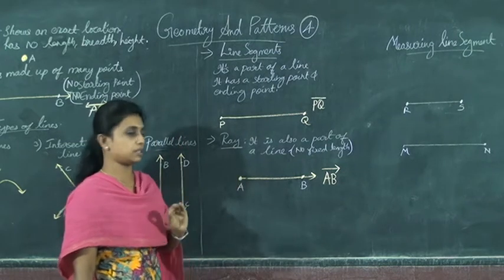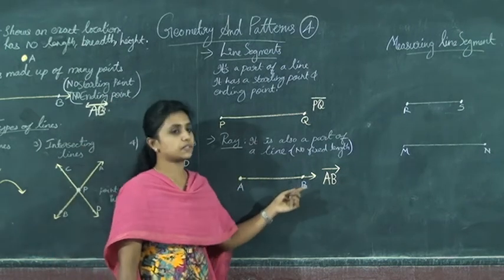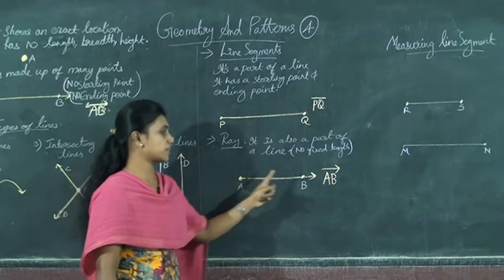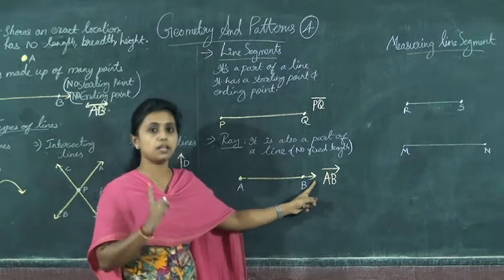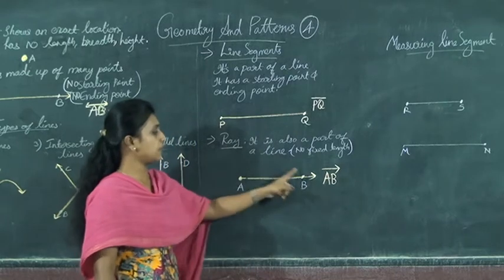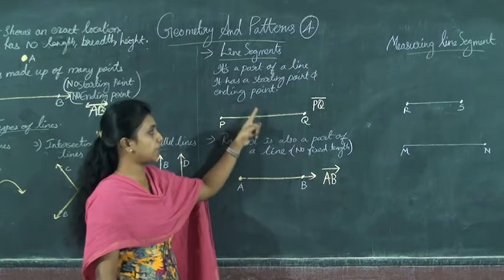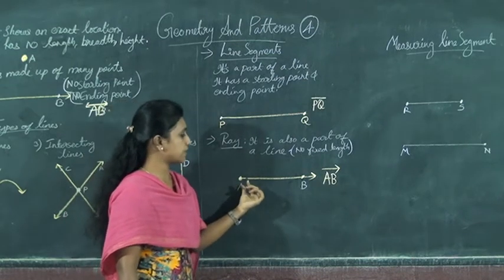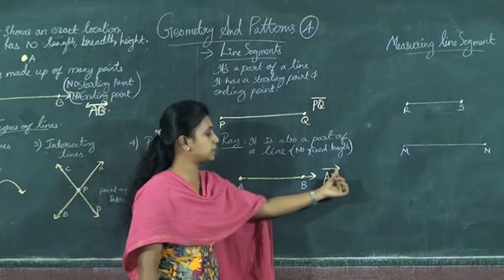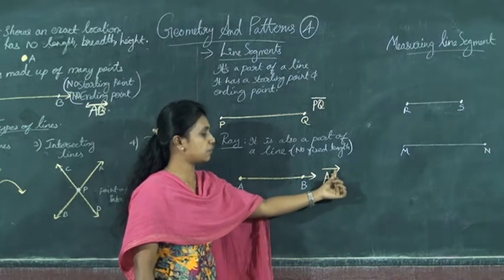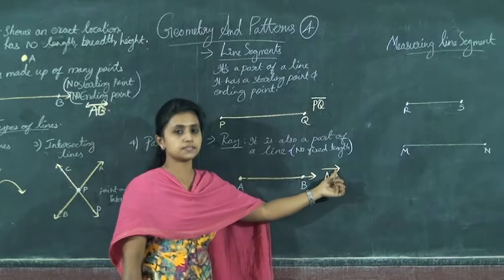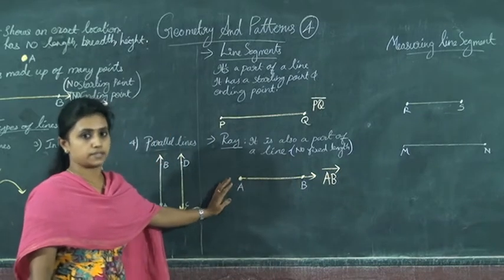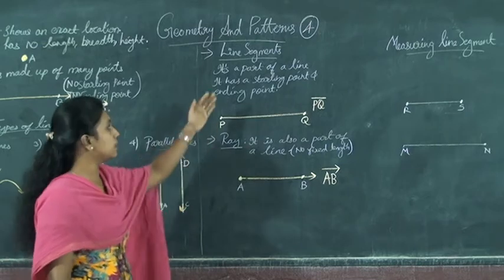A Ray is a part of a line but it has no fixed length. It has a starting point but no ending point. It is represented by one arrow. For example, Ray AB is represented by one arrow. So to summarize: the facts about points, lines, line segments and rays.